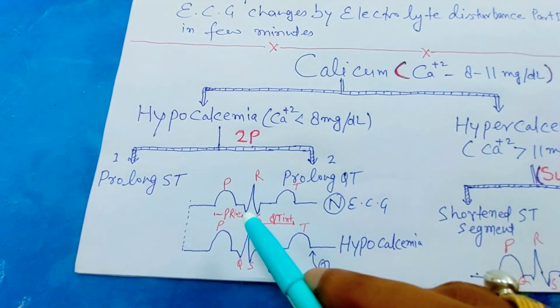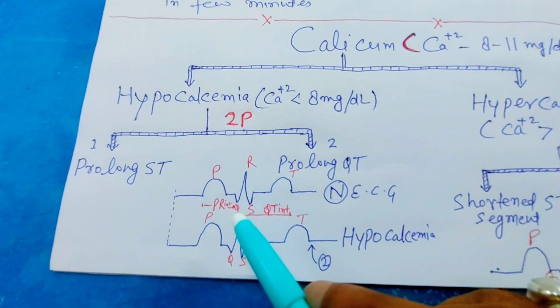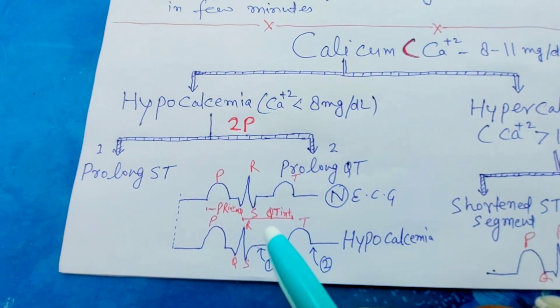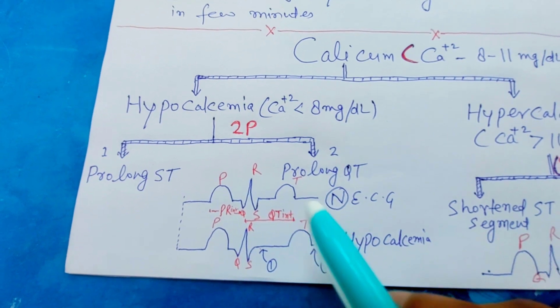And this is the normal ECG. See here PR interval, P wave, QRS, and this is QT interval. This is normal ECG.